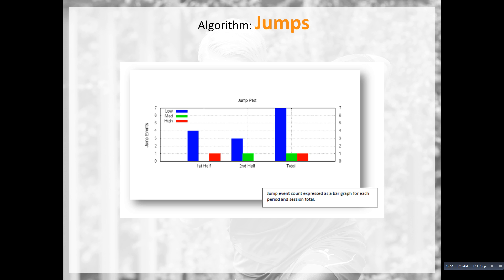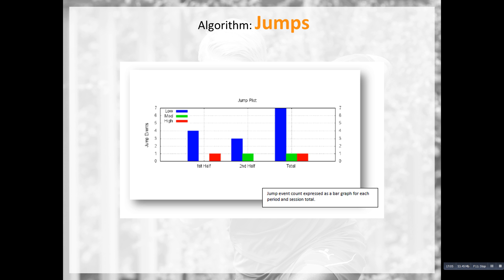Finally, we've got jumps through our inertial sensors, giving us how many times an athlete jumps and the height of those jumps. We use specific thresholds to classify jumps as low, medium, or high. That's a quick insight into our inertial sensors and what they can be used for — thank you for listening.